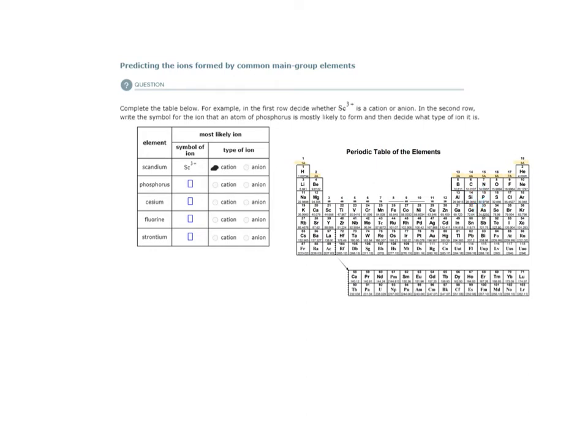So phosphorus: negative 1, negative 2, negative 3. We write its element symbol with its charge at the top, and it's not 4 but 3 minus, and it is an anion.